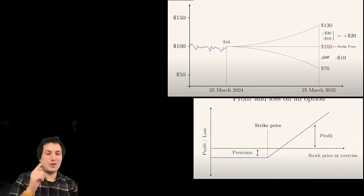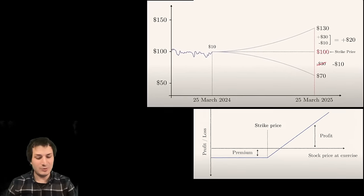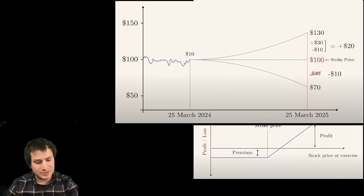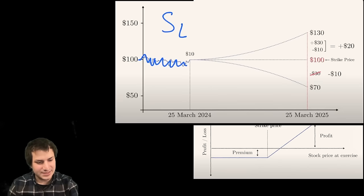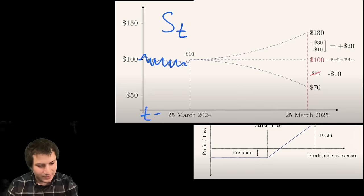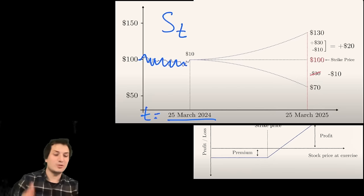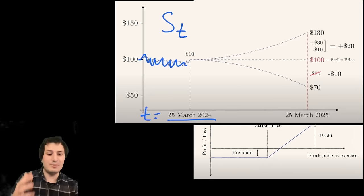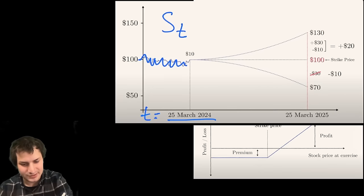Here are screenshots from that video with a nice example of what's going on. There's some stock price S(t), going up and down over time. On some date t — for example the 25th of March, 2024 — the stock price has some value. In the example, S(t) is exactly $100.